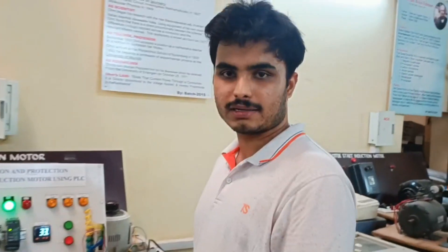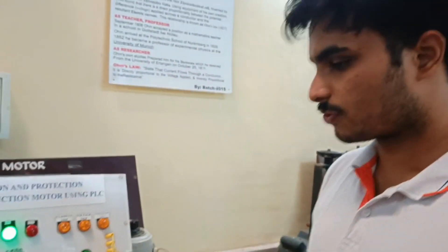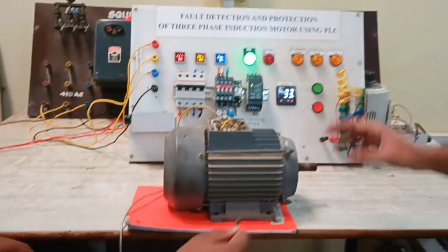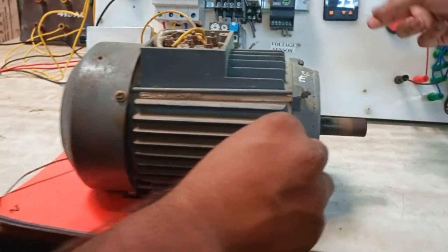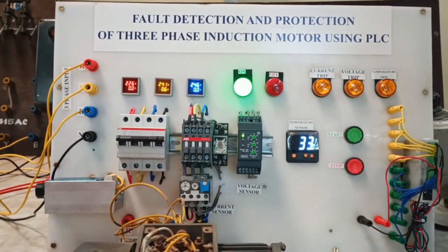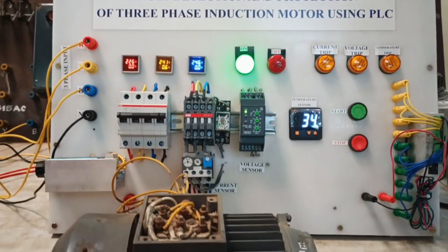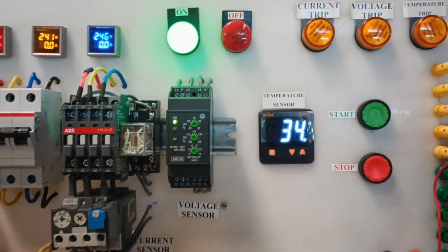Now we are trying to create a temperature fault. So to do that we have connected a temperature sensor to our motor and we have preset value of 36 degree Celsius in our temperature sensor. So once this temperature sensor detects 36 degree Celsius it will turn off the motor.